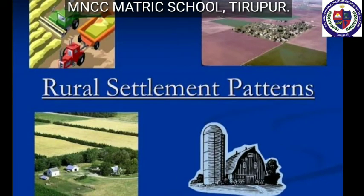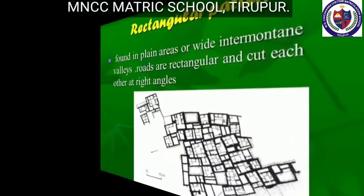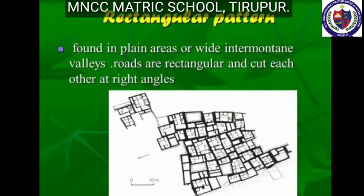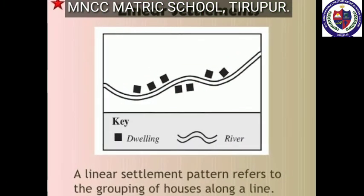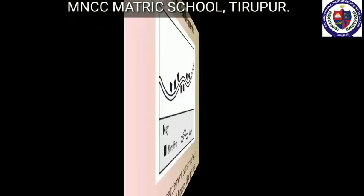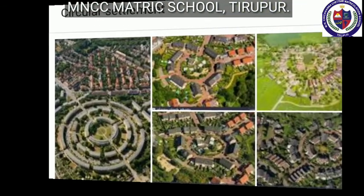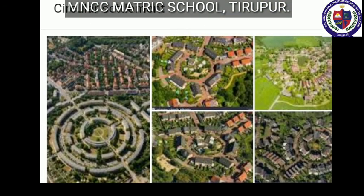First: Rectangular pattern - rectangular patterns of settlements are found in plain areas or valleys. Next: Linear pattern - in a linear pattern, the houses are located along a road, railway line, along the edge of a river valley, or along a river. Next: Circular or semi-circular pattern - the pattern of settlement found around lakes, ponds, and sea coasts.